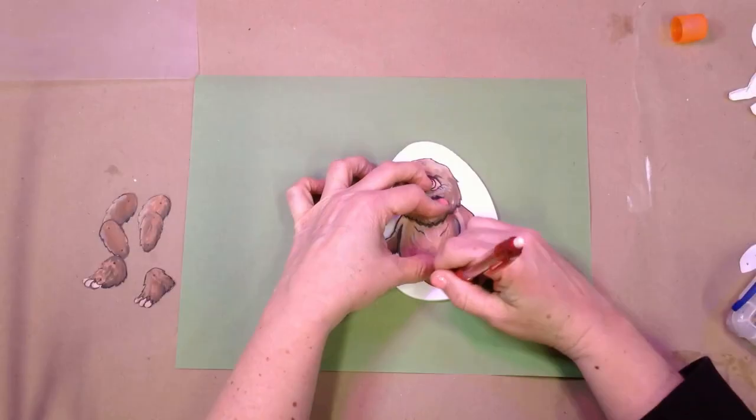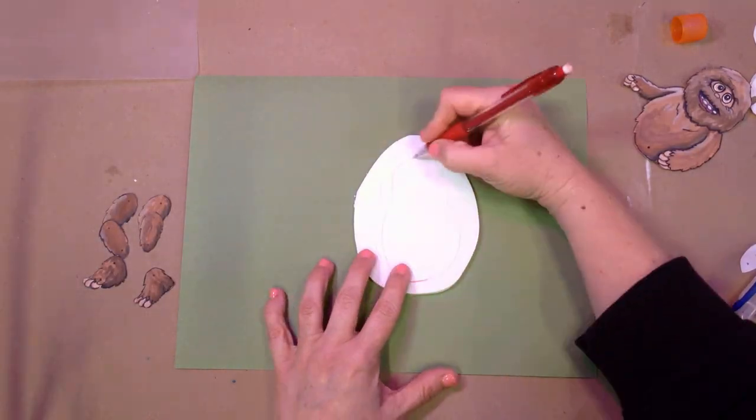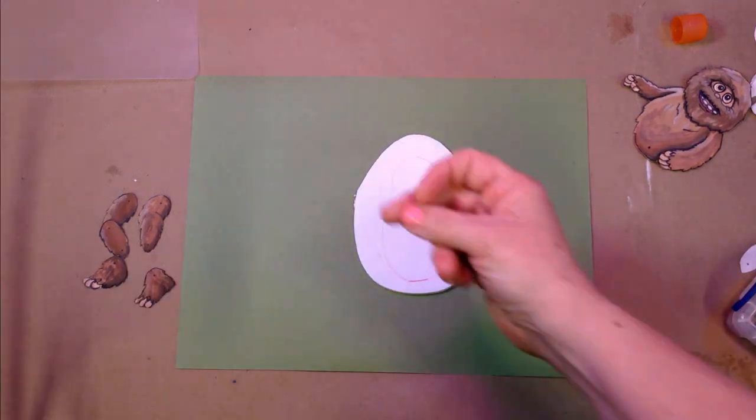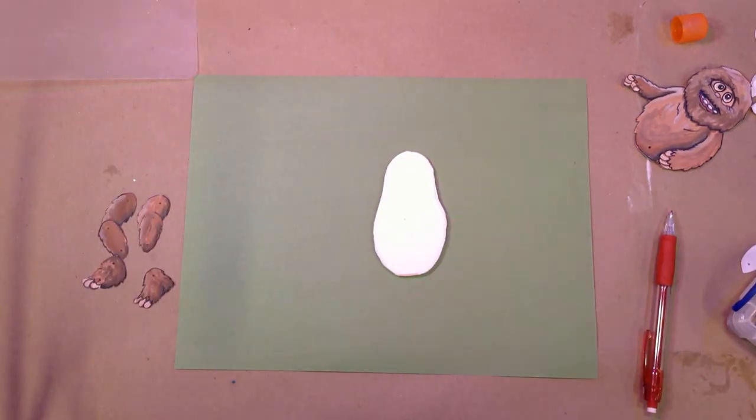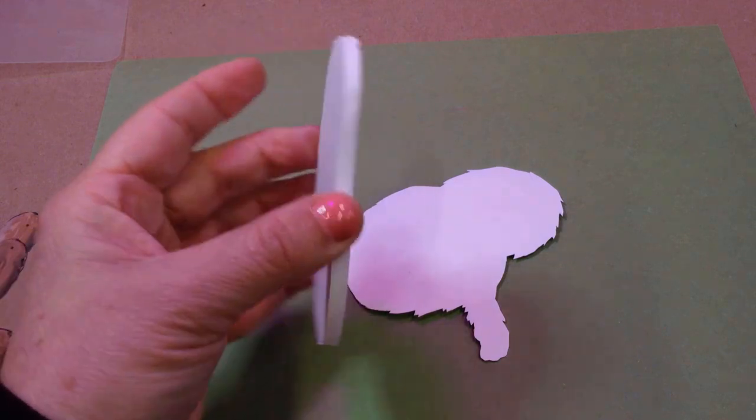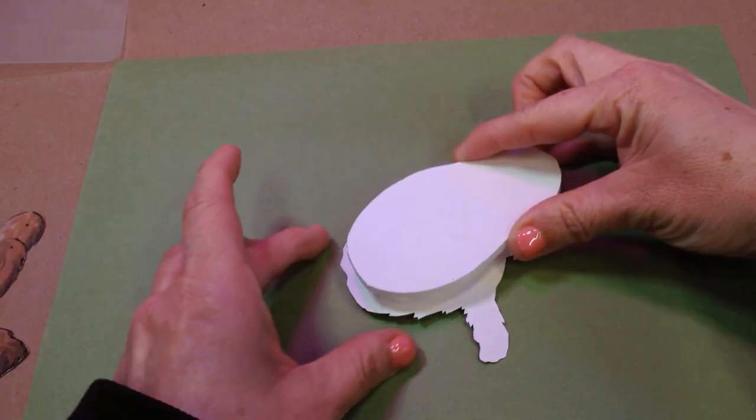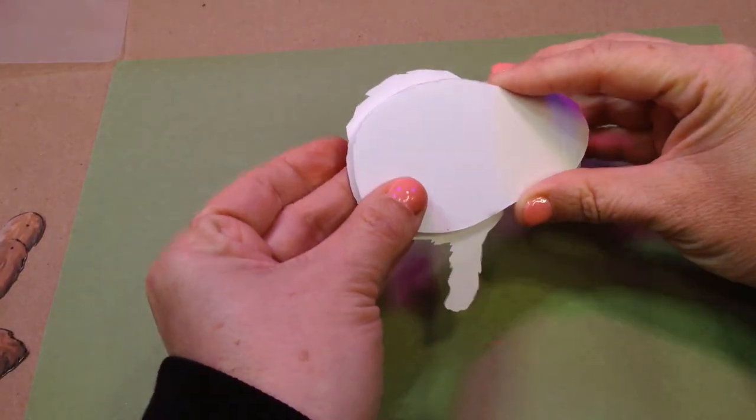Next, I need to add some thickness to Bigfoot's body. I'm cutting a rough eggplant shape out of foam board. You could use corrugated cardboard here too. We'll glue that onto the back of Biggie's torso here, making sure to line up the base of the foam or cardboard with the bottom of Biggie's torso.